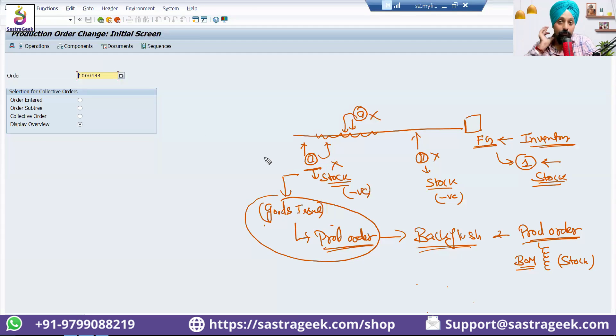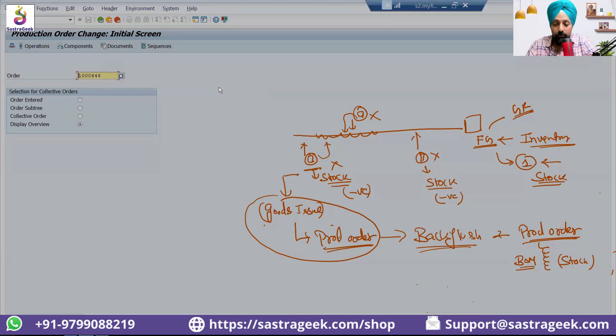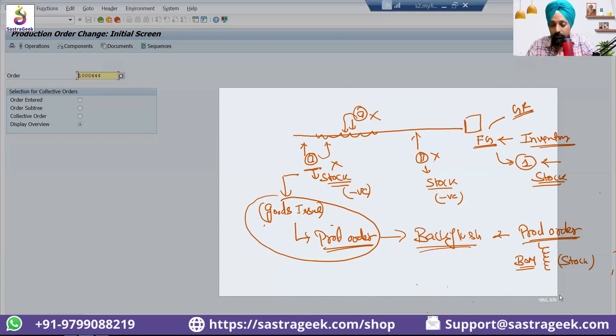So now you would be able to understand when we use the terminology goods issue, consumption of the material. If the automatic goods issue with the production order confirmation is happening, that is called backflush. Backflush, and when we say goods receipt, is receiving of the finished goods into the stock. It is called goods receipt transaction. Okay, this is what goods receipt, this is what goods issue, and backflush terminology means.